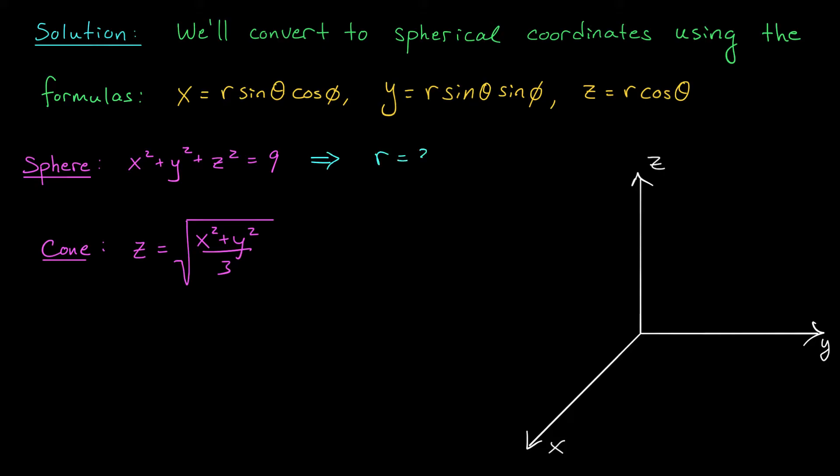But what if you didn't recognize this as the equation of a sphere of radius 3? How would you make the conversion? Well, remember folks, you can always fall back on your conversion formulas. If you replace x, y, and z with these formulas above, you should be able to simplify this expression down to r = 3. In fact, that's exactly what I'm going to have to do with my cone. This equation is a little too complicated, and I'm not sure what it's going to look like in spherical coordinates. So let's replace x, y, and z with the expressions above and see what we get.